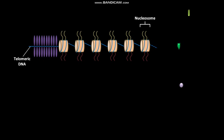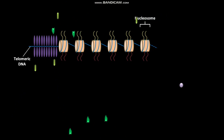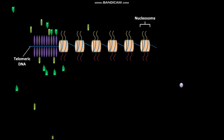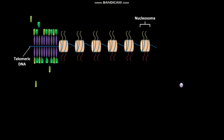Proteins like SIR3 and SIR4 bind to the RAP1. SIR2 protein then binds to SIR4.